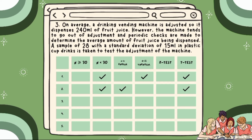Number 3: On average, a drinking vending machine is adjusted so it dispenses 240 ml of fruit juice. However, the machine tends to go out of adjustment and periodic checks are made to determine the average amount of fruit juice being dispensed. A sample of 28 with a standard deviation of 15 ml in plastic cup drinks is taken to test the adjustment of the machine. Answer: Our N is 28 which is less than 30. The population standard deviation is unknown based on the given. Based on the given situation, the test statistic that we are going to apply is the T-test.